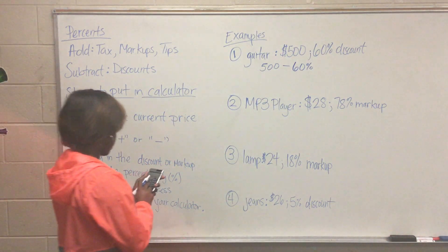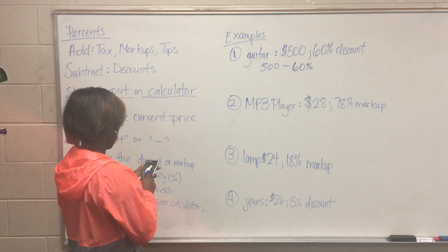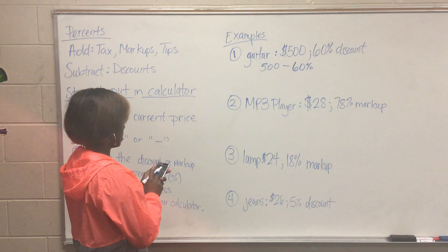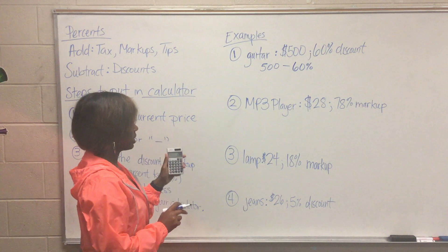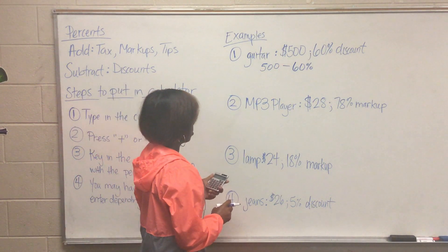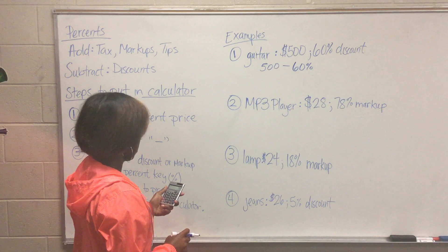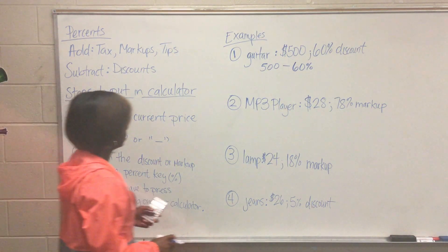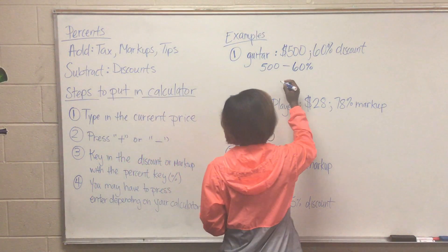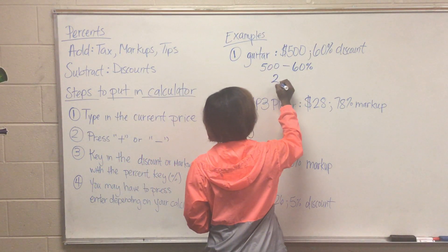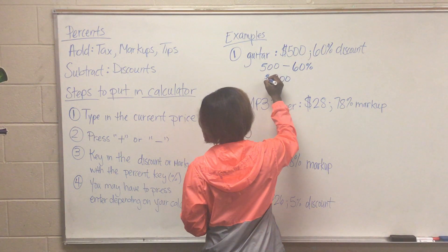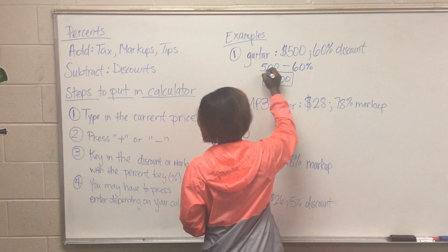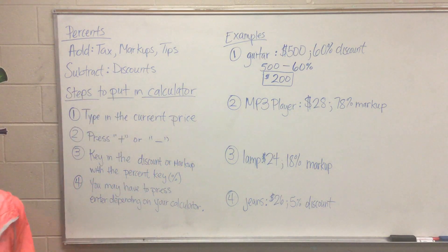So then we go to $500 minus 60% using the percent key, and on my calculator I get $200. So the guitar that is $500 with 60% off is going to give me $200 for that guitar.